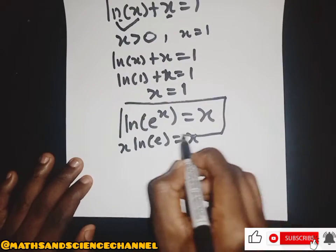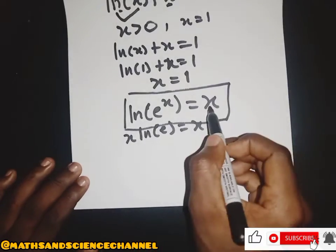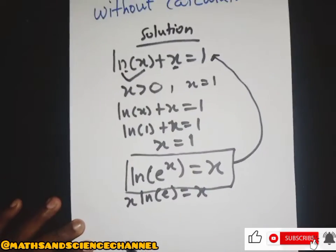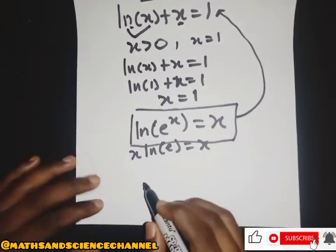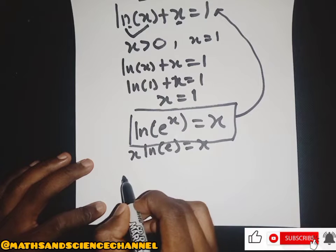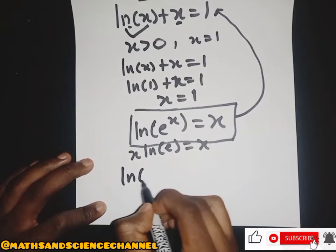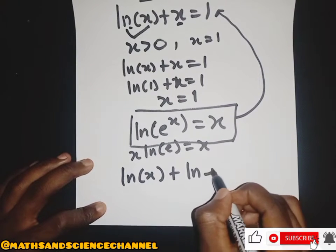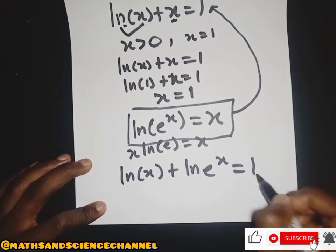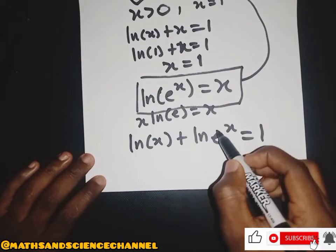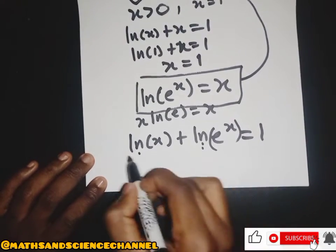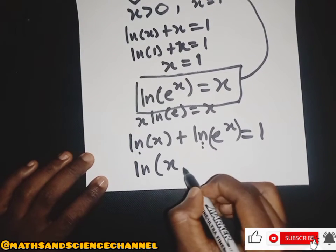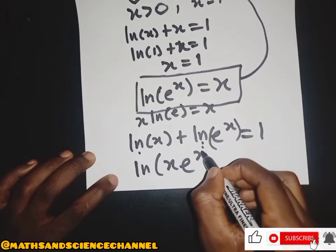If we substitute s with this expression and put it into the general equation, we have ln(x) + ln(e^s) = 1. Since the bases of both logarithms are the same, we can combine them using the product rule, putting them together as a single logarithm.